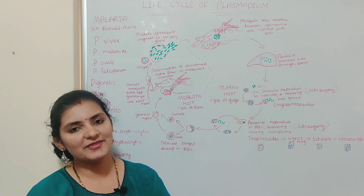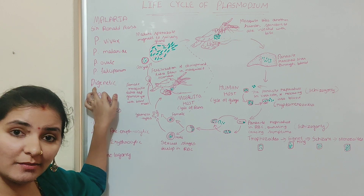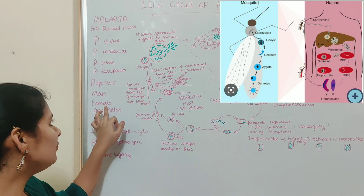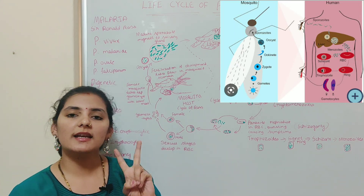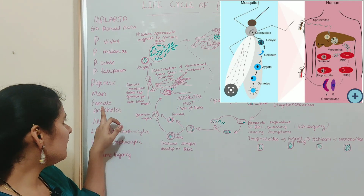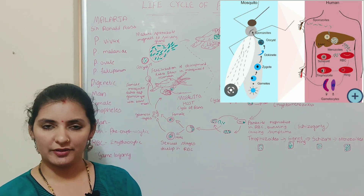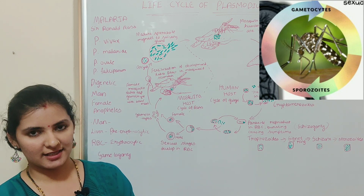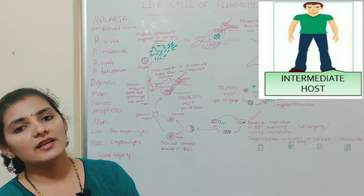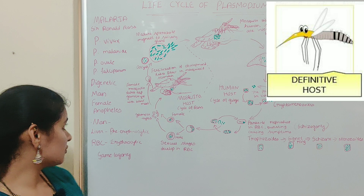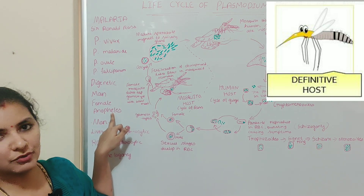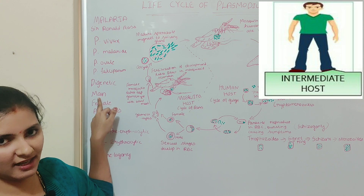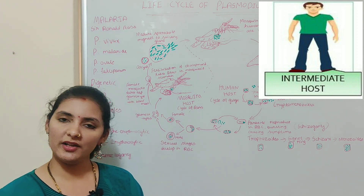Plasmodium requires two hosts to complete its life cycle. Such a life cycle is called digenetic — 'di' means two. The two hosts are man and the female Anopheles mosquito. Man is considered the secondary host or intermediate host, and the female Anopheles mosquito is considered the primary host or definitive host. The primary host is one where sexual reproduction of the parasite takes place, and the secondary host is where asexual reproduction takes place. Sexual reproduction occurs in the female Anopheles mosquito, and asexual reproduction occurs in man.